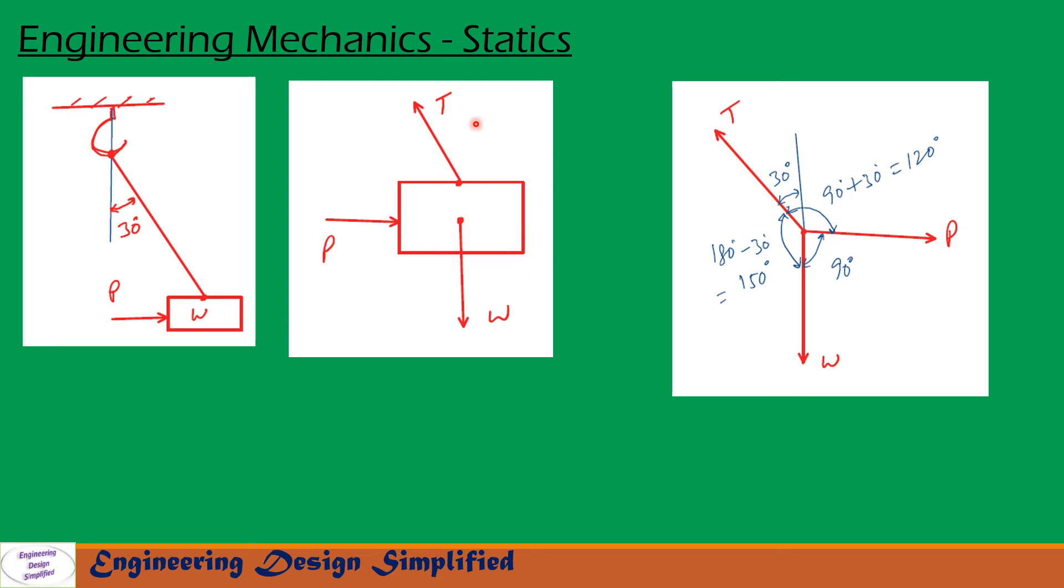So the system of forces can be represented as shown here. This is a horizontal force P and weight W acting downwards. Angle between P and W is 90 degrees and tension in the string is acting towards this and it makes an angle 30 degrees with the vertical. So the angle between T and P is 90 plus 30, that is 120 degrees. Similarly, the angle between T and W will be 180 minus 30 degrees, that is 150 degrees.